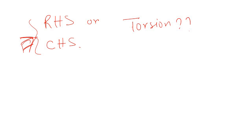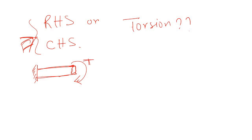Let's assume this is a shaft of any arbitrary cross-sectional shape — it doesn't have to be circular. This is an arbitrarily cross-sectional shaft. Now you are applying a torsion, and the question is: what will be the stress distribution across this arbitrary shape due to the applied torsion?